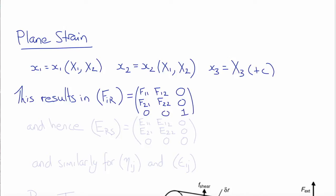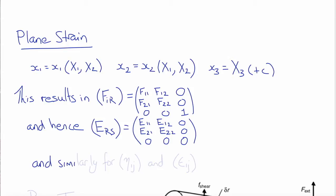Using that to calculate the strain, we would get strain components E_RS that were only in the first and second rows and columns, where the third row and third column would all be zero. So that's the definition of plane strain, and you get the same pattern for the Almansi or Cauchy strain tensor definitions.